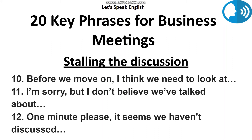Now, how do you stall a discussion? There are times when someone may need to stall the meeting to bring up a point that has been missed or needs further discussion. To stall the discussion means to interrupt the meeting and bring it to a temporary stop before the chairperson introduces the next item on the agenda. This can happen at any time when someone wants to raise a point or ask for a more in-depth discussion. For example: "Before we move on, I think we need to look at how we can ensure this sort of production delay doesn't happen again."